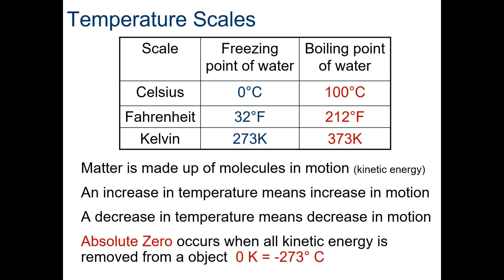So you'll need to write this table down to know our different scales. In Celsius, water freezes at zero degrees, boils at 100. Fahrenheit, 32 degrees Fahrenheit for freezing, 212 for boiling. And then Kelvin, which is the other metric scale besides Celsius, is 273K is the point of freezing water, and 373K the boiling point of water.